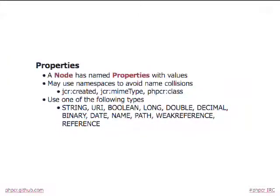On a node you can have any number of properties. Supported types include string, boolean, long, double, date, and others. References and weak references are very important concepts. With a reference you're maintaining referential integrity, so you cannot remove a node that is being referenced. With a weak reference, it can point to nothing. In PHPCR, a referenced node has a list of referrers — it's bi-directional.